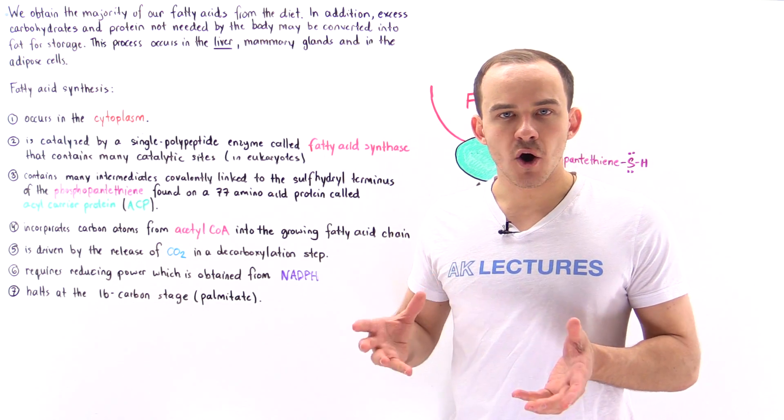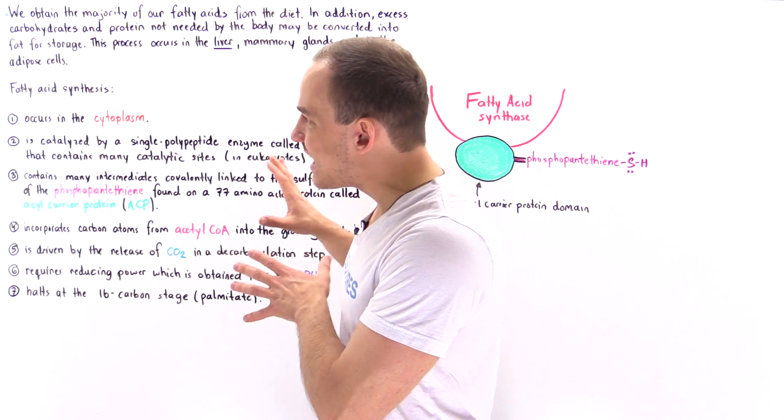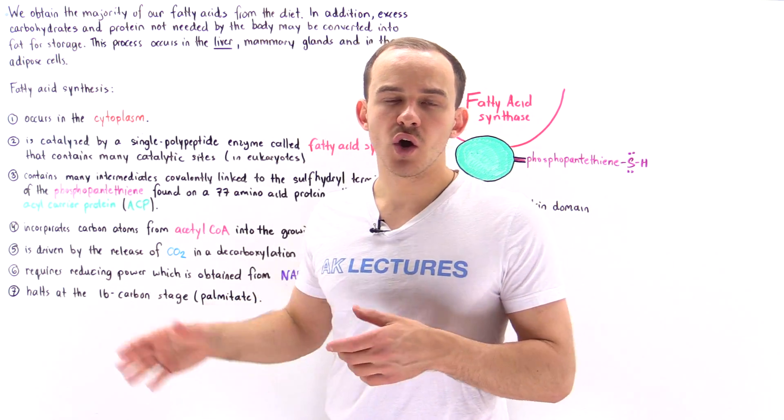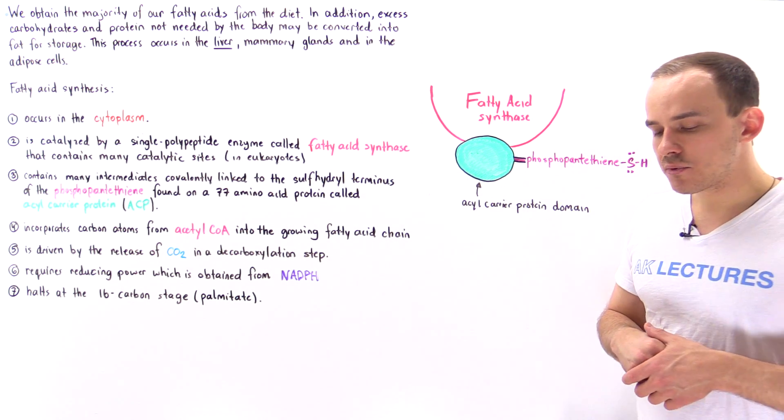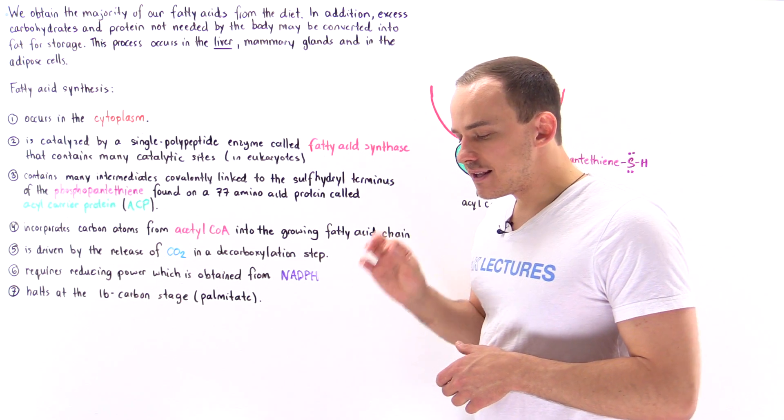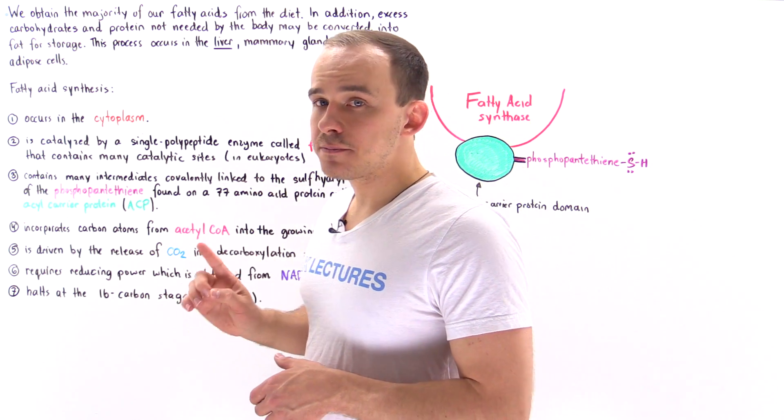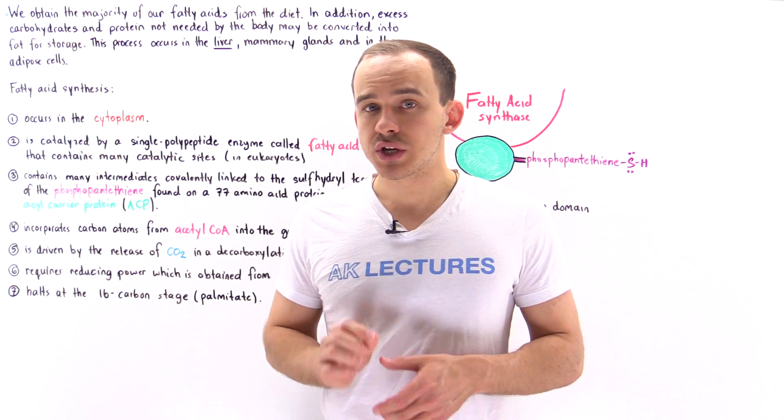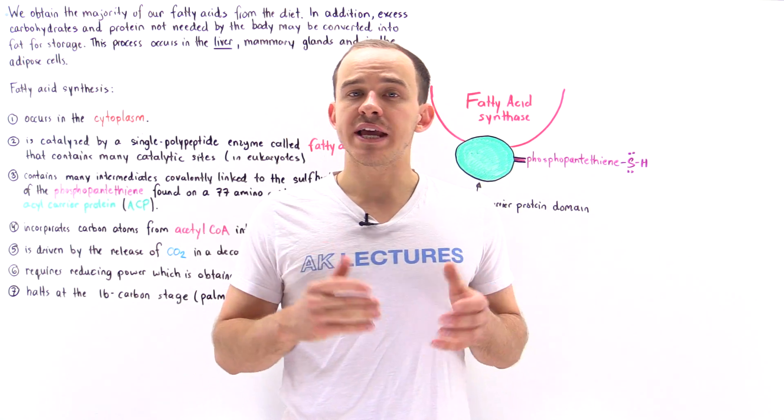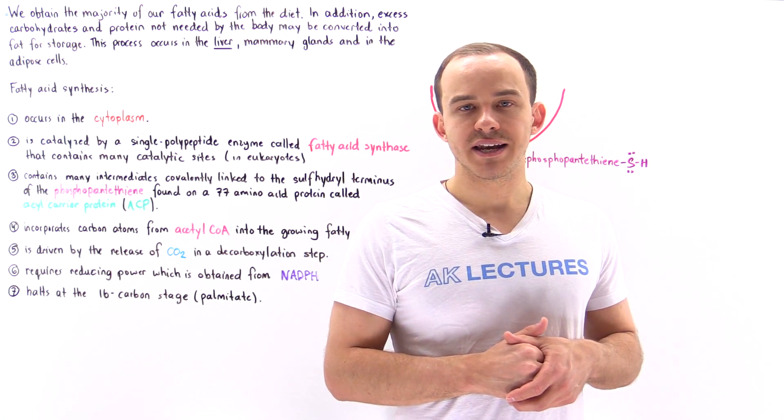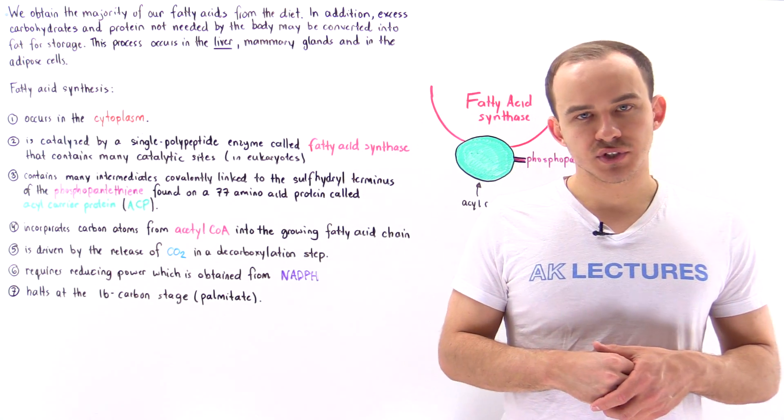But in this lecture, what I'd like to focus on is seven important facts that you have to know about fatty acid synthesis. So fact number one, fatty acid synthesis takes place in the cytoplasm. And this is in contrast to beta oxidation, the breakdown of fatty acids, which takes place in the matrix of the mitochondria.